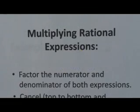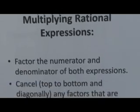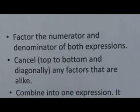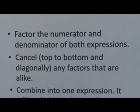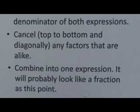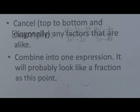All right, multiplying rational expressions. Now to multiply, we're really going to have to simplify as well. So the first step always in these rational expressions, when you're simplifying, multiplying, dividing, factor, factor, factor. Factor the numerator. Remember, that's the top. And factor the denominator of both expressions. And then we're going to cancel again, just like we did with the simplifying. Cancel top to bottom, and this time we can cancel diagonally, any factors that are alike. When we get through canceling, we'll combine all that's left into one expression. It should still probably look like a fraction at this point.